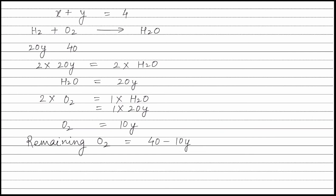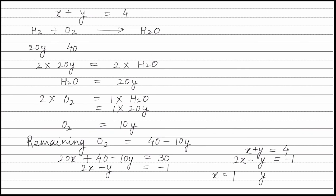The remaining gases occupy a volume of 30 ml. At the end of the reaction only two gases remain: nitrogen and oxygen. Therefore, volume of remaining nitrogen (20X) plus volume of remaining oxygen (40 minus 10Y) equals 30. Solving this gives 2X minus Y equals minus 1. We now have X plus Y equals 4 and 2X minus Y equals minus 1. Solving these simultaneous equations gives X equals 1 and Y equals 3, therefore the formula of ammonia is NH₃.